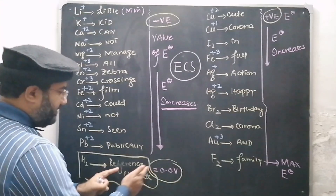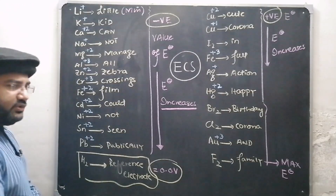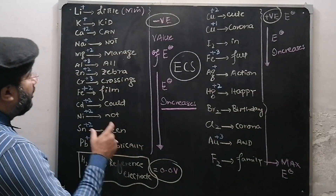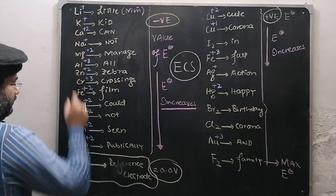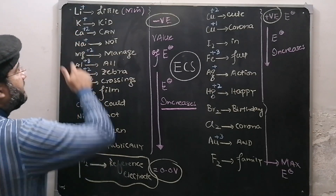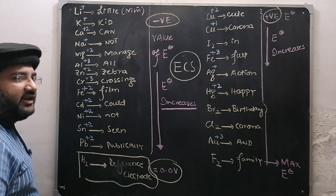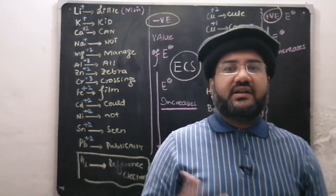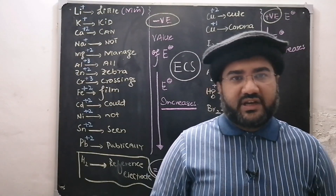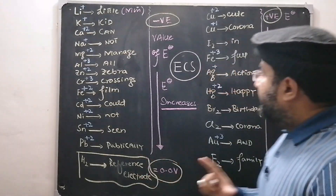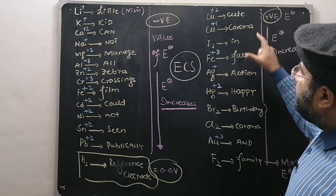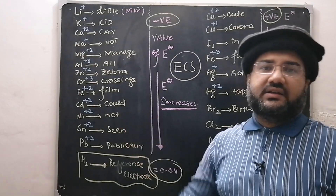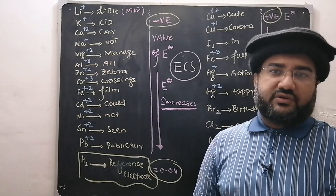Then Fe (iron), cadmium, nickel, tin, and Pb (lead). The sentence 'Film could not seen publicly' will help you memorize the elements from Fe²⁺ to Pb²⁺. Next comes the SHE, which is the reference electrode having zero electrode potential for both oxidation and reduction. All elements from lithium to lead have a negative value of standard reduction potential.